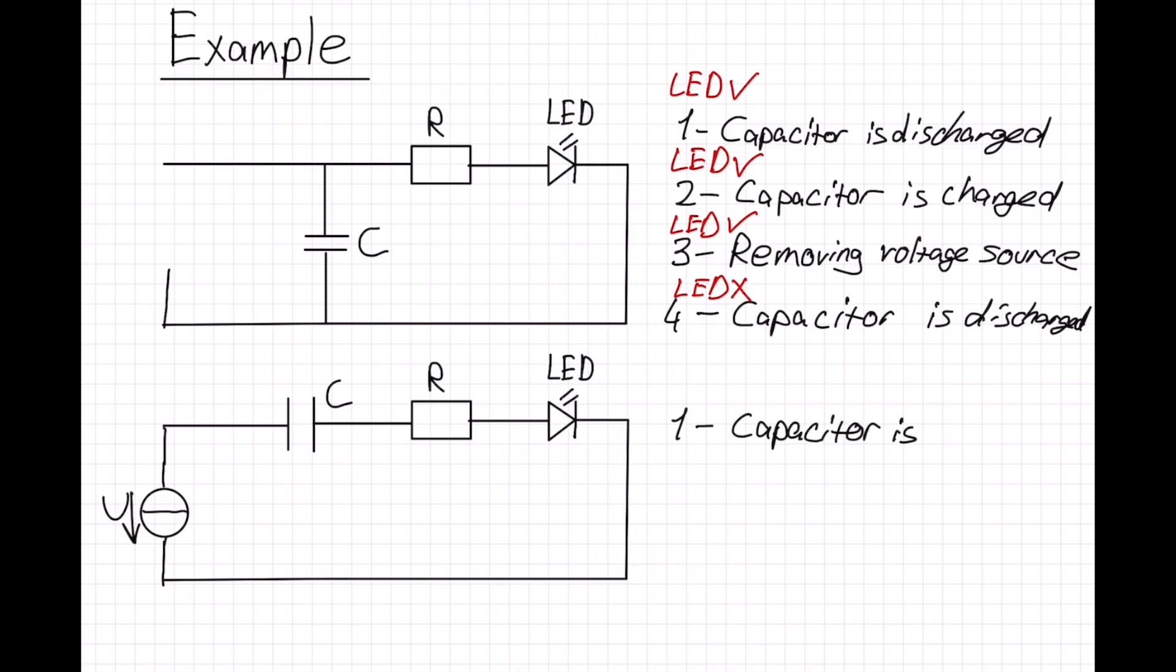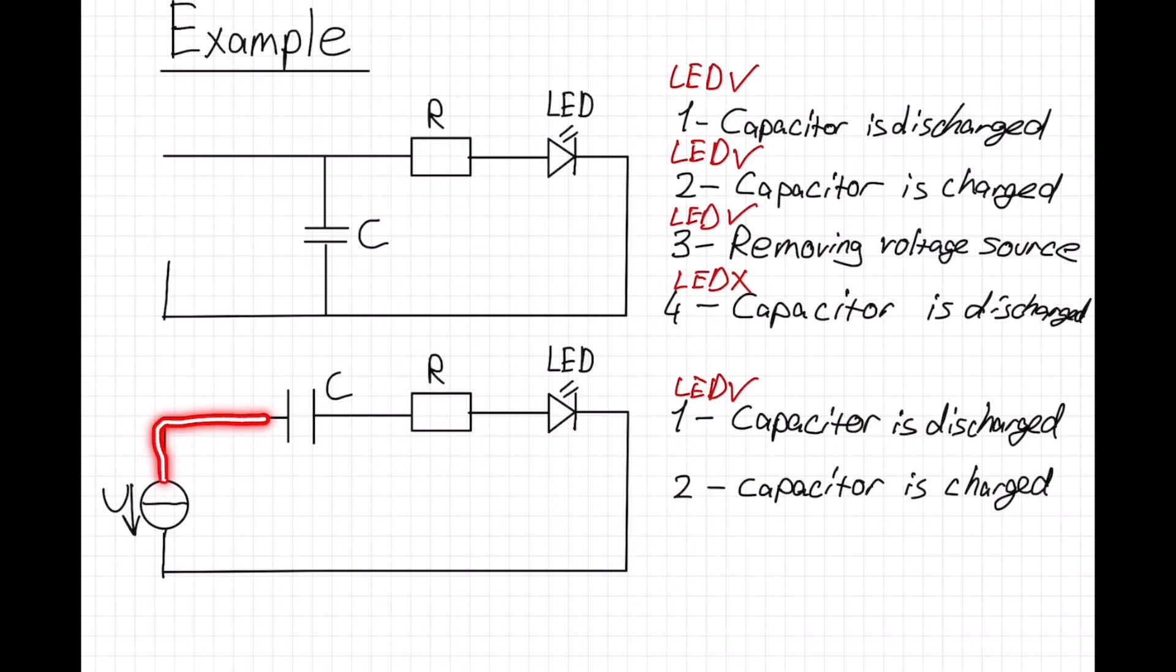Our capacitor is again discharged. So we are charging it and our LED also turns on because capacitor lets current through. In the second stage, our capacitor is fully charged, which means it blocks the current and our LED doesn't turn on.